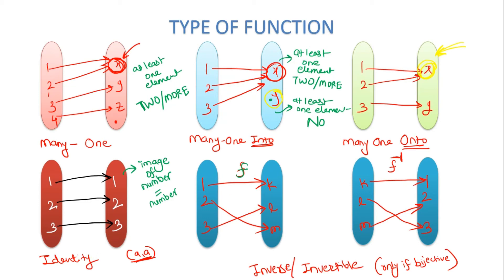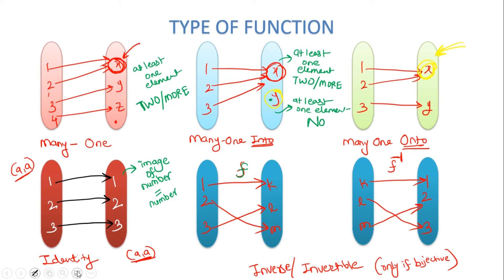The identity function is a function where the same element maps to itself. For example, 1 maps to 1, 2 maps to 2 — the same element from both sets maps to itself. This is called the identity function.